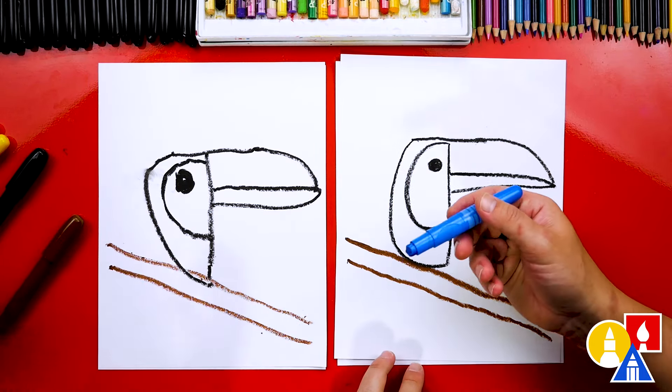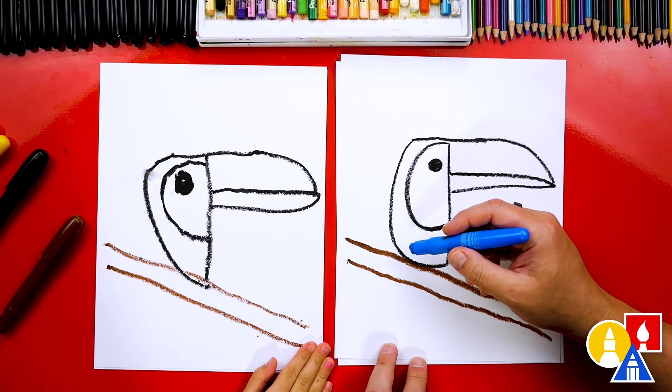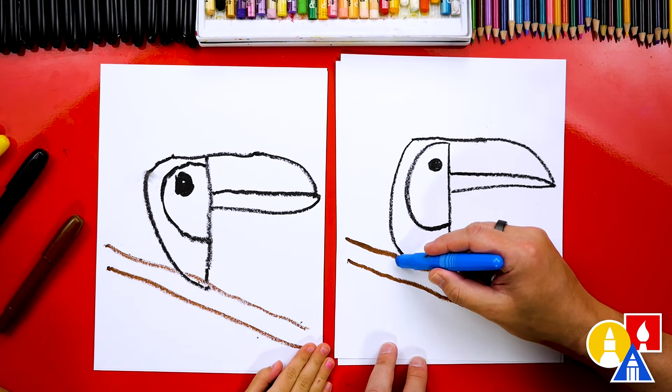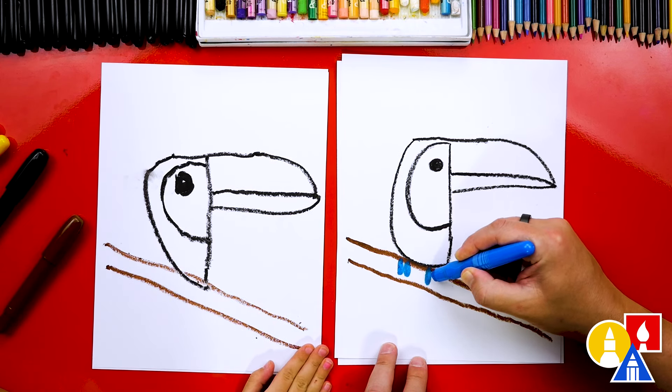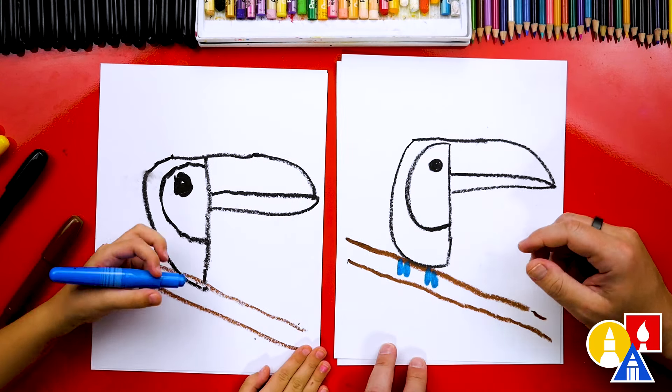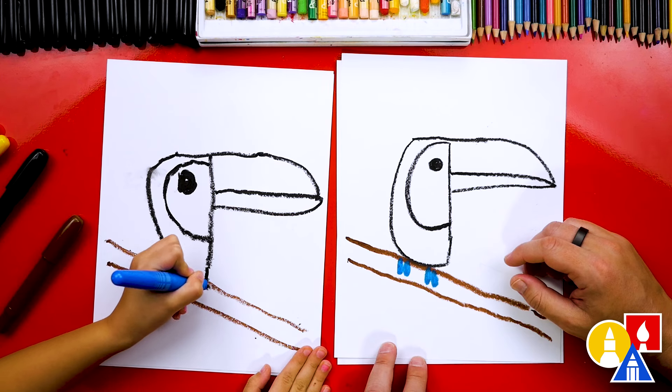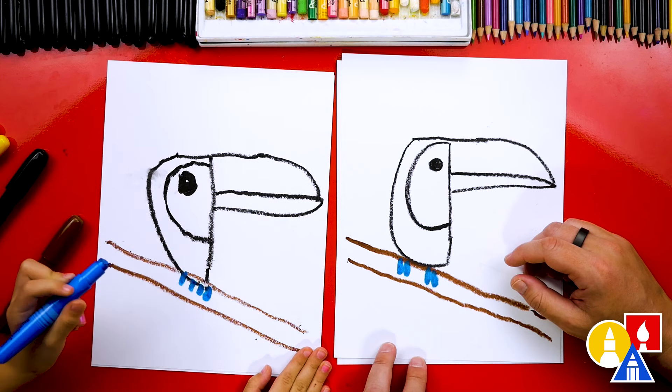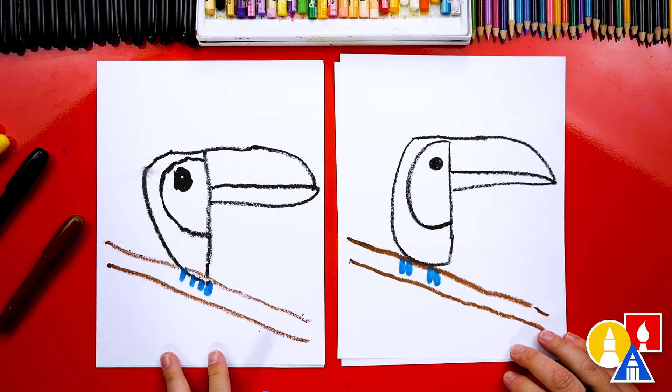Now we're switching to our blue crayon, and we only have one, so we'll share it. And did you know that toucans have blue toes? Blue feet. So we're going to draw two oval shapes for one foot and two oval shapes for another foot. Do you want to draw the two toes on each foot? There you go. One, two, three, four. I love it. Olivia, we did it. We finished drawing our toucans. They look really cool.